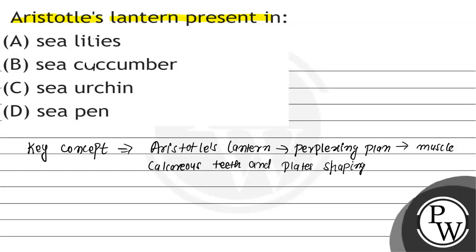उसके बाद बात करें माउथ जो होता है, उसमें उनके पास पाया जाता है एक intricate dental contraption — इसी को जो है, कहा जाता है Aristotle's lantern.